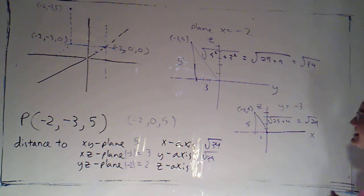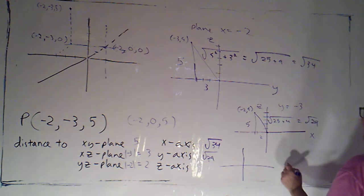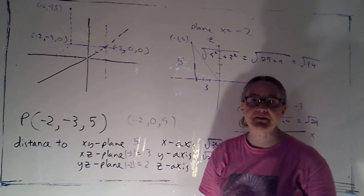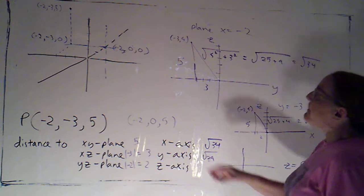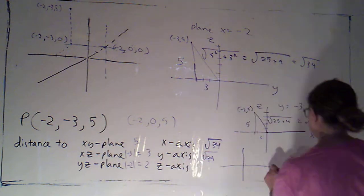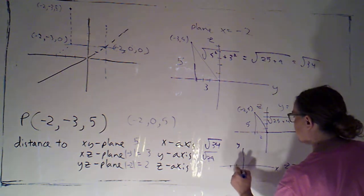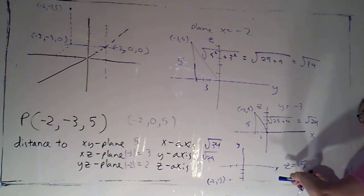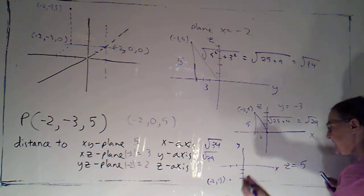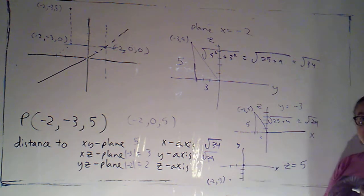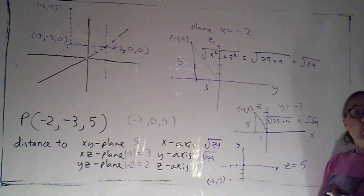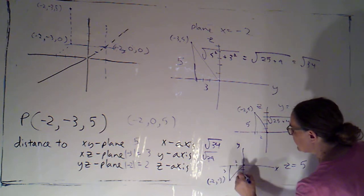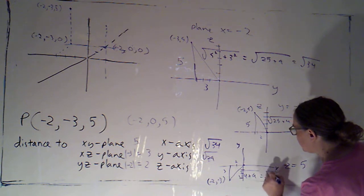To get to the z-axis, I look in the plane z equals five — the plane parallel to the xy plane hovering five units above it. Point P has an x value of negative two and a y value of negative three, so in this plane I denote it as just negative two, negative three (the z value is automatically five). The point on the z-axis has x and y both equal to zero. By Pythagoras, the distance is the square root of four plus nine, which is the square root of 13.